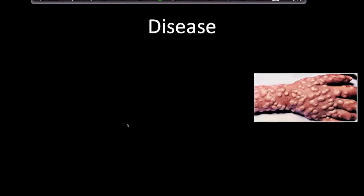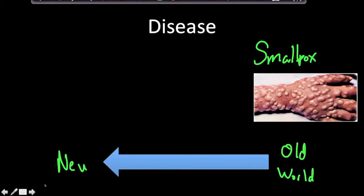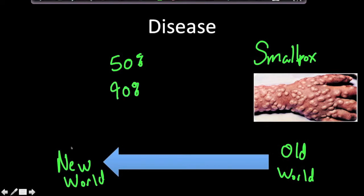First, let's talk about the diffusion or spread of disease during the Columbian Exchange. The spread of disease was mostly a one-way exchange — it went from the Old World to the New World. There were a few diseases that went the other way, but nothing as significant as smallpox and typhoid. Estimates say 50% to 90% of the Native American population died, making smallpox an extremely deadly disease for the New World population.